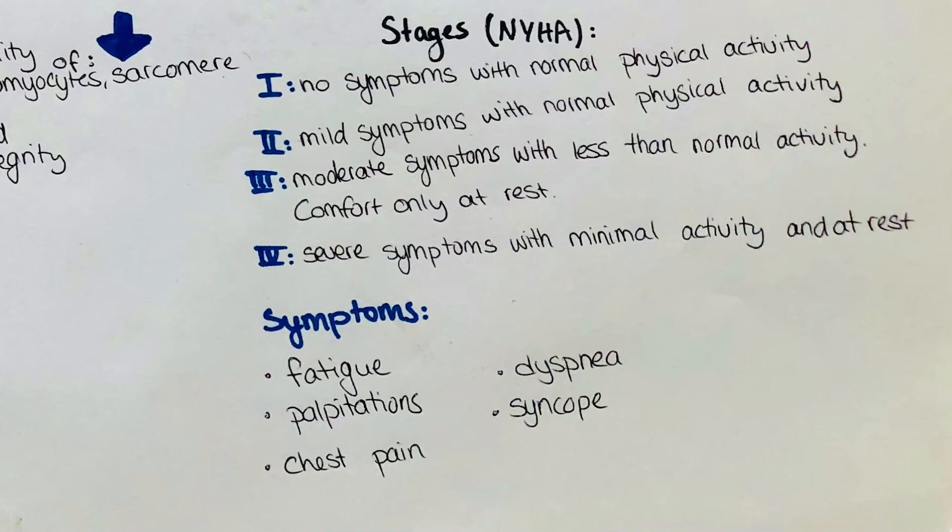In stage two, patients have mild symptoms when they follow normal physical activity. Stage three and four are those that are usually observed in the doctor's offices and hospitals as patients feel progressively weak. In stage three, patients have moderate symptoms with less than normal activity and only experience comfort in rest. They will avoid certain activities which they could do before.